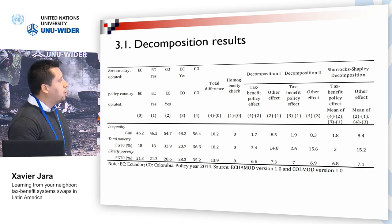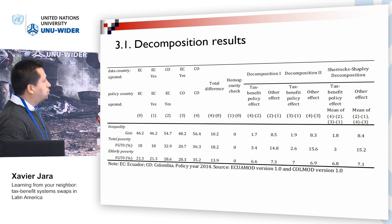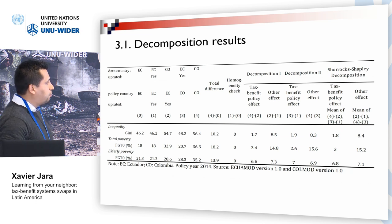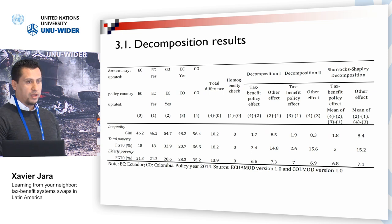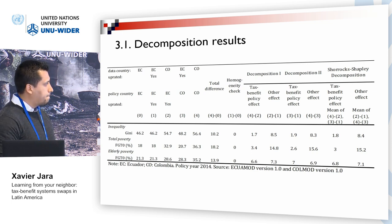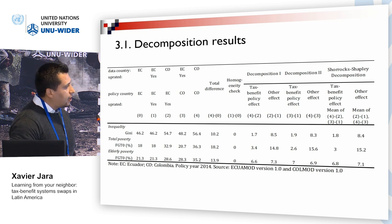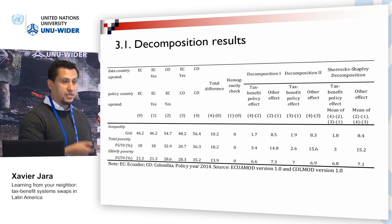Looking at the Shapley decomposition — the average between the two decomposition alternatives — column two represents the Gini when we apply Ecuador's tax benefit rules to Colombia's population. The Gini in this case is 54.7, smaller than the Colombian baseline of 56.4, meaning that applying Ecuador's tax and benefit rules to Colombia yields lower income inequality, and this also holds for poverty. Although the total difference between the baselines is 10.2, around 1.8 points is accounted for by differences in tax and benefit policies, indicating scope in Colombia to change policies to reduce inequality.